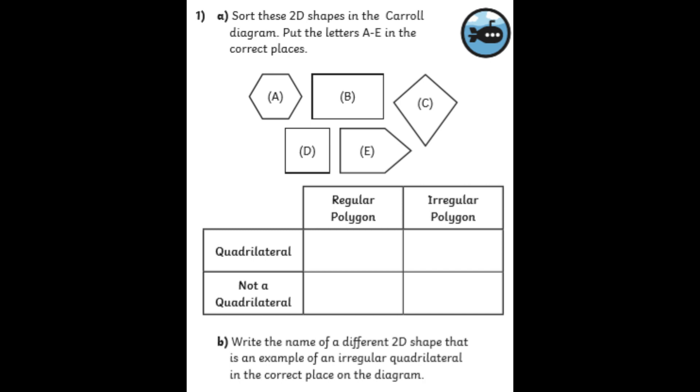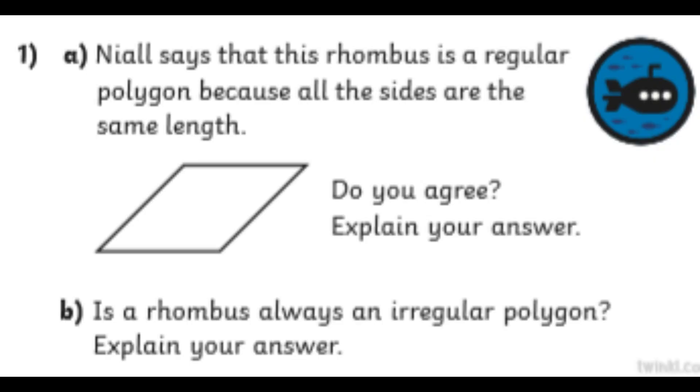Moving on to chilli 2. Niall says, this rhombus is a regular polygon because all the sides are the same length. Do you agree? So, think about what we did earlier with Sam and a clipboard. Yes, I agree because. So, give your reasons. Use the evidence in the picture. Or, I disagree because. And as I just said, use the evidence in the picture to support your answer.